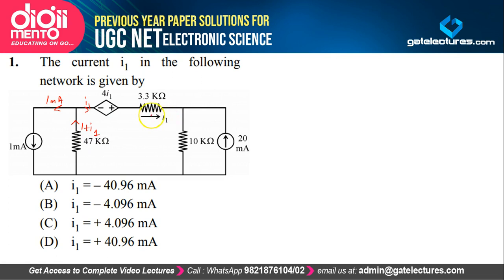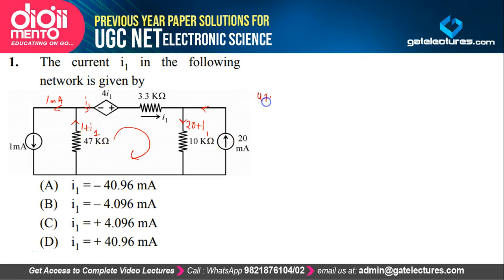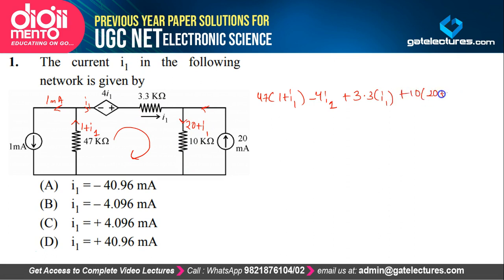Current through this element is already I1. Applying nodal analysis again: I1 comes from one branch and 20 milliampere came from another, so total current passing through the 10 kilohm resistor is 20 plus I1. Now applying mesh analysis in this middle loop — adding total voltages around the loop and their sum equals zero. Voltage across the 47 kilohm element is 47 into (1 + I1), voltage across the dependent element is minus 4I1, voltage across the 3.3 kilohm is 3.3 times I1, and voltage across the 10 kilohm is 10 into (20 + I1). This should add up to zero.